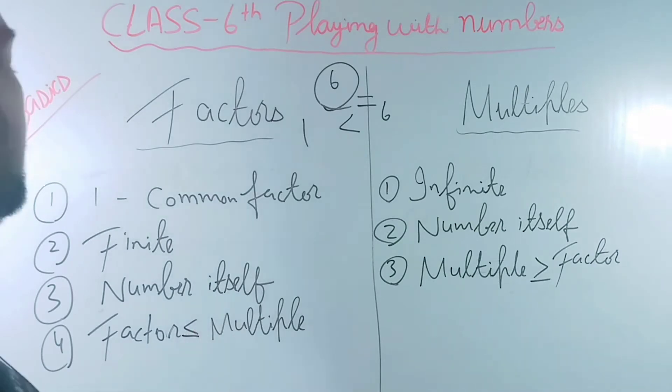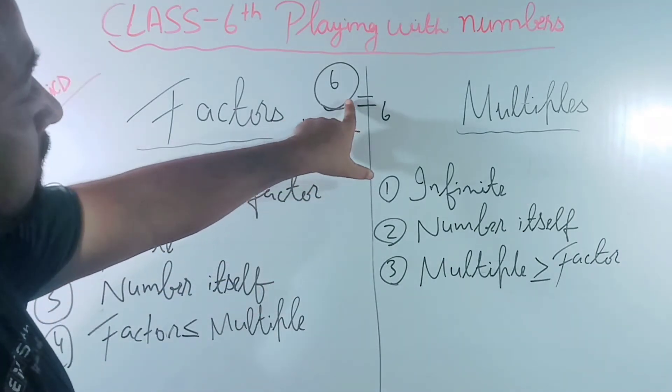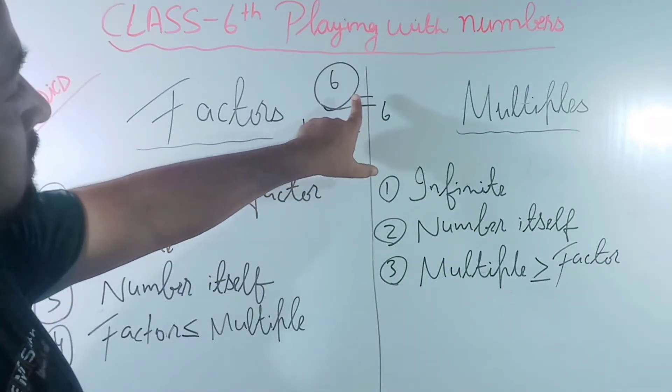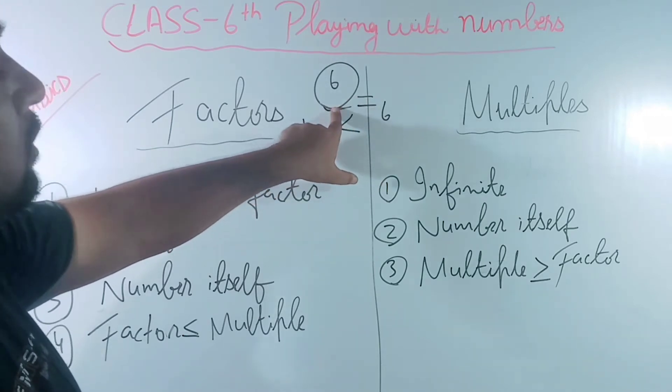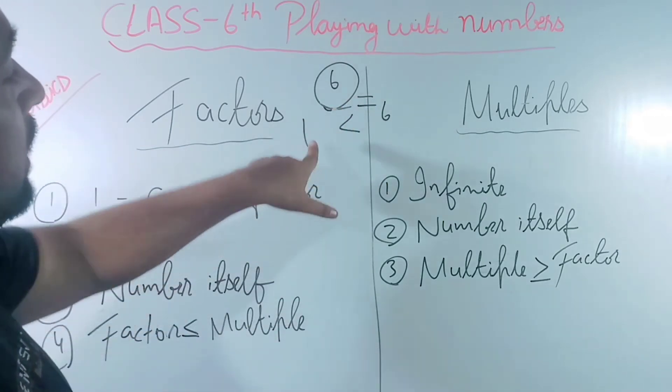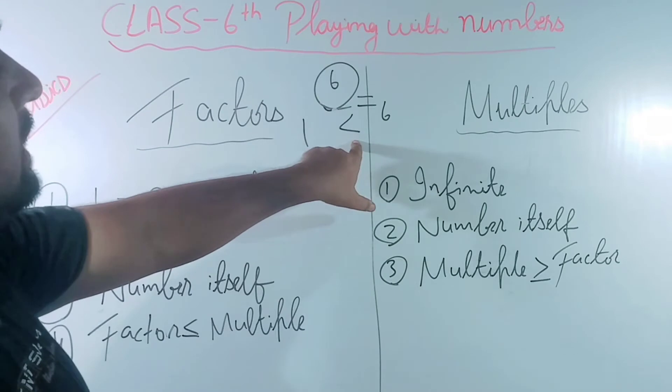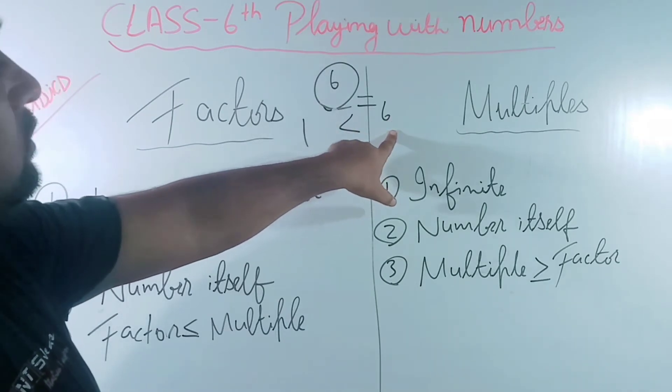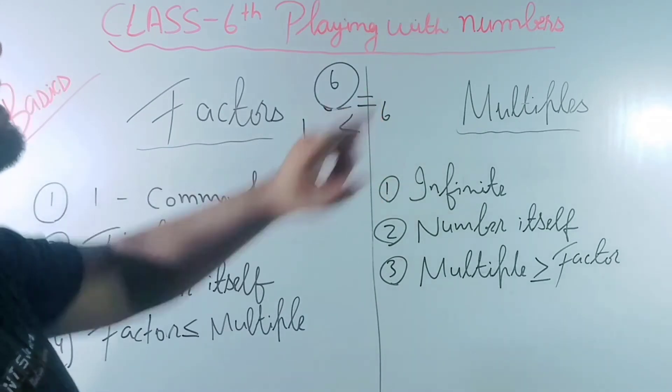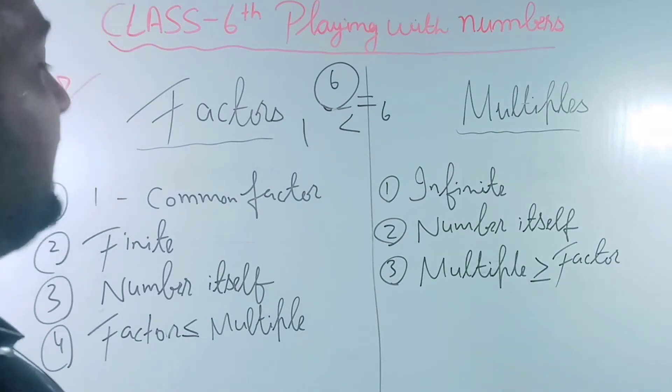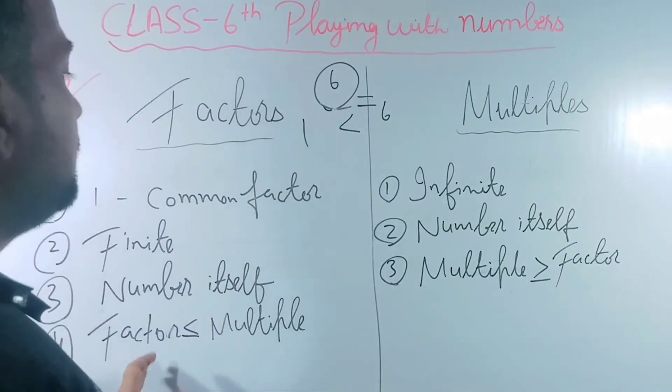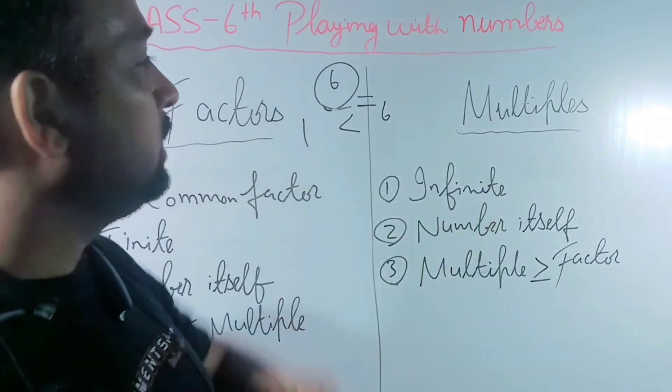Next one: factor is less than or equal to multiple. You can see 6 equal to 6 because 6 is also a factor, and 1 is less than 6. Now come to the multiples.